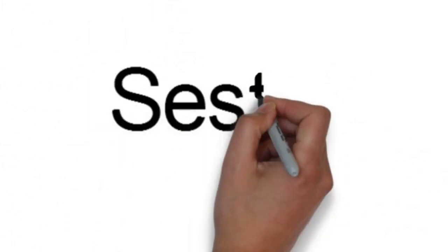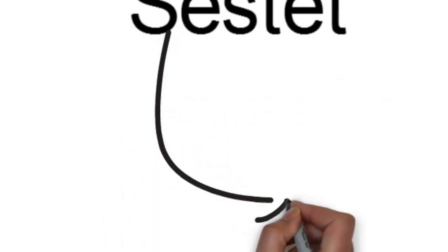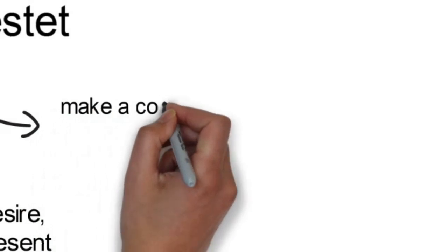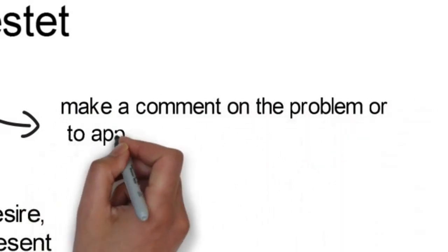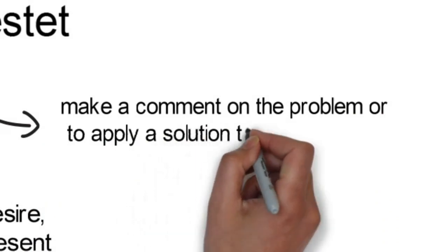Whereas the sestet, the part having six lines continuously, three times six line stanzas, it just make a comment on the problems or to apply a solution to it.